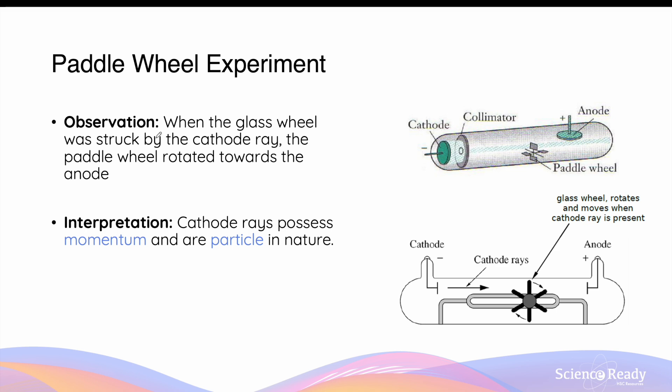A paddle wheel is an apparatus that can freely rotate about its own axis. In these experiments, when the glass wheel or the paddle wheel was struck by the cathode ray, it was observed that the paddle wheel rotated towards the anode. In the bottom diagram, the top half of the paddle wheel is in the trajectory of the cathode ray. It was observed that the paddle wheel rotated on its own axis in a clockwise direction, and also moved towards the anode.